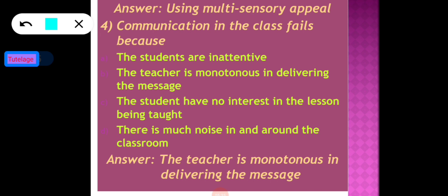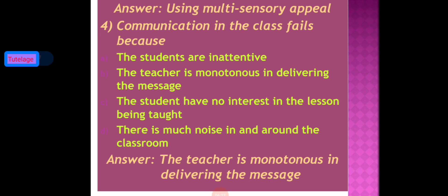The fourth question: communication in the class fails because — options are: the students are inattentive, the teacher is monotonous in delivering the messages, the students have no interest in the lesson being taught, and there is much noise in and around the classroom. The most appropriate answer is option B — the teacher is monotonous in delivering the message in the classroom.